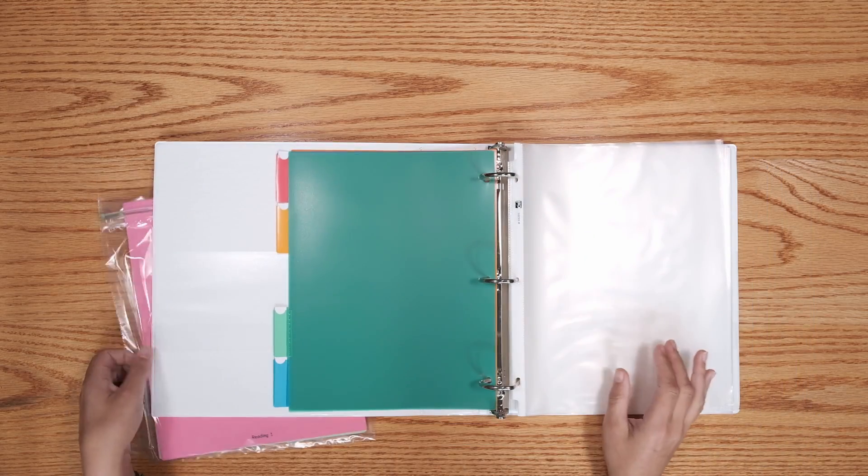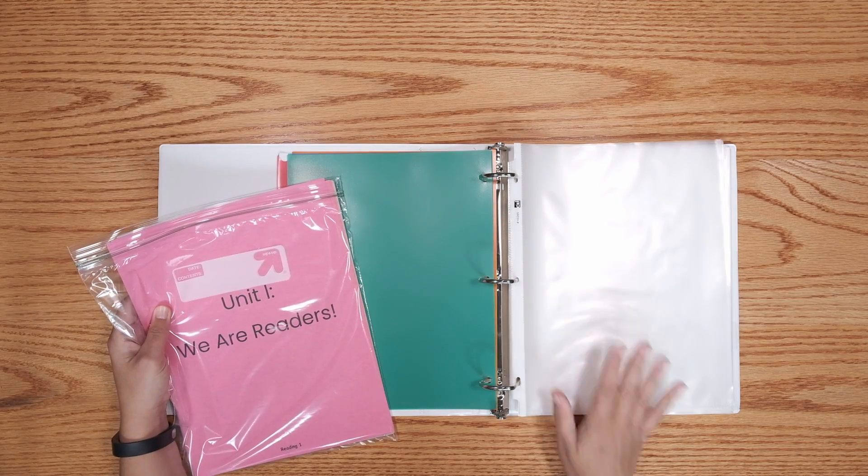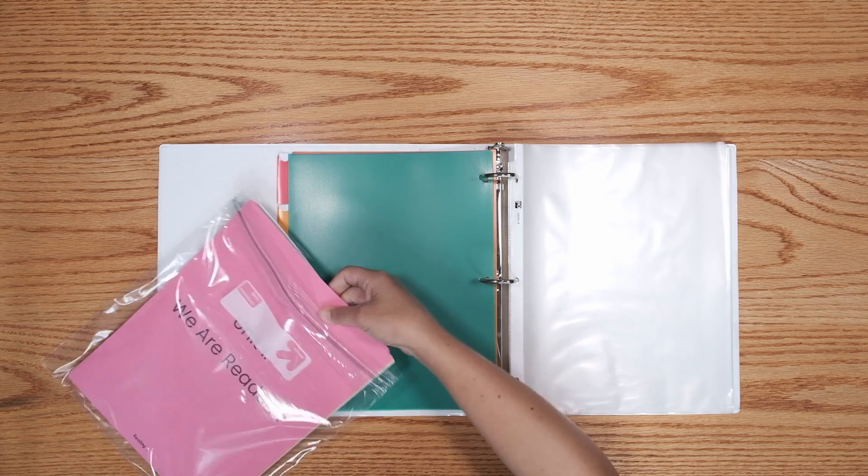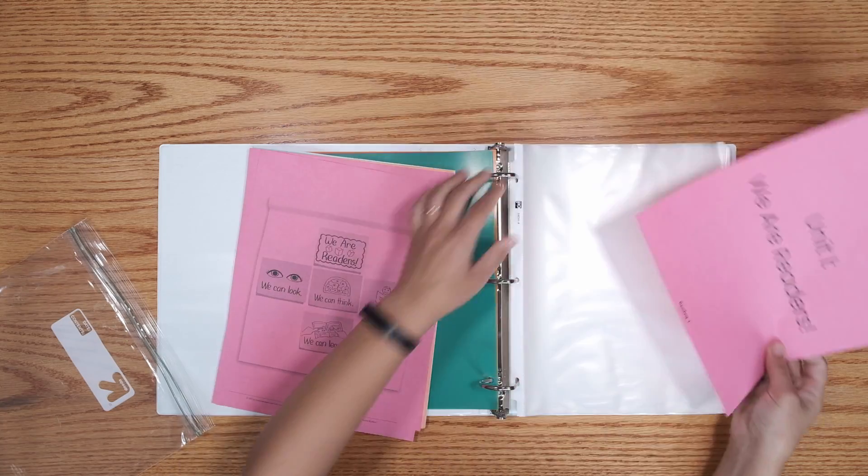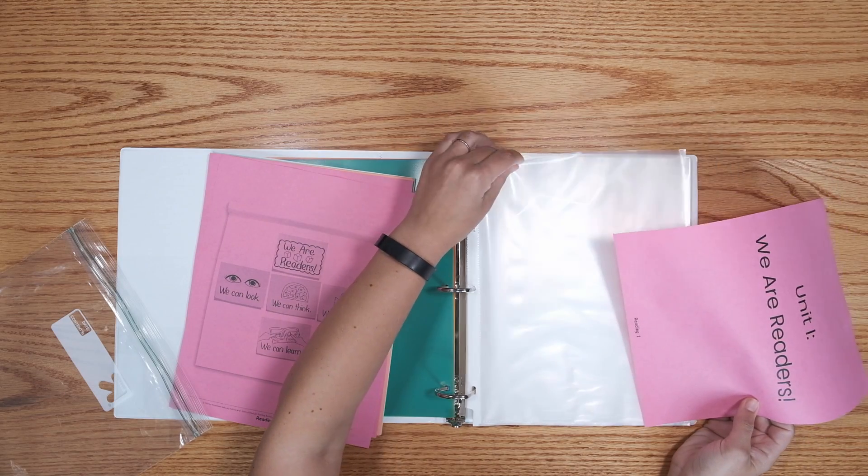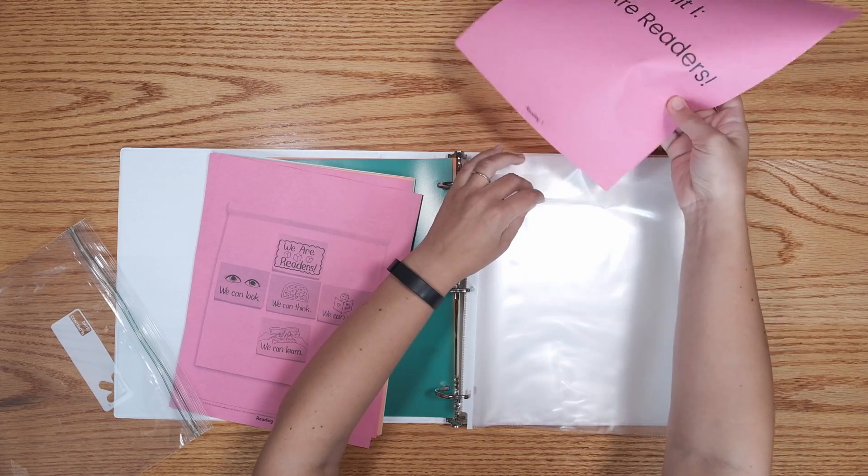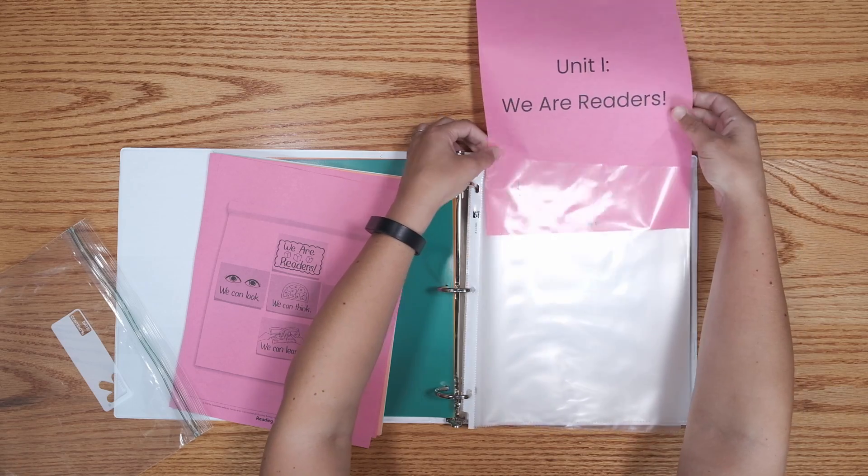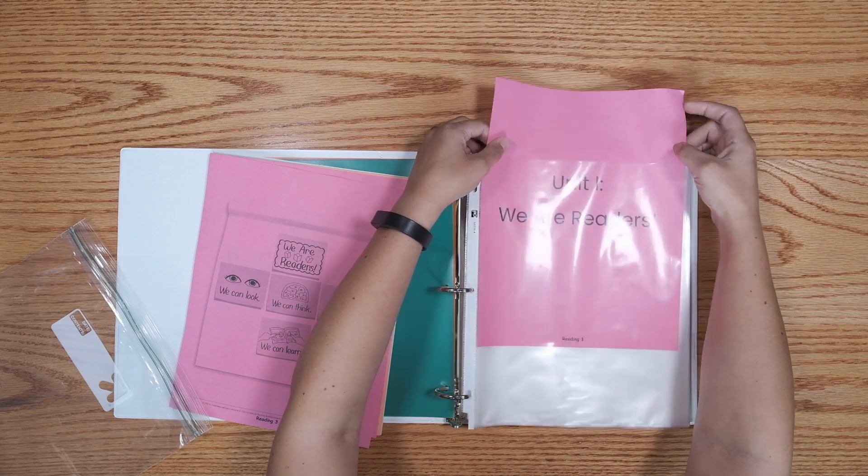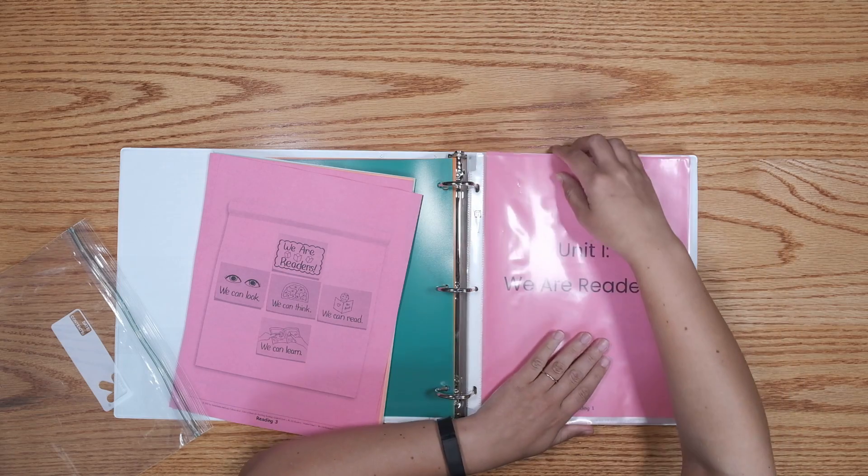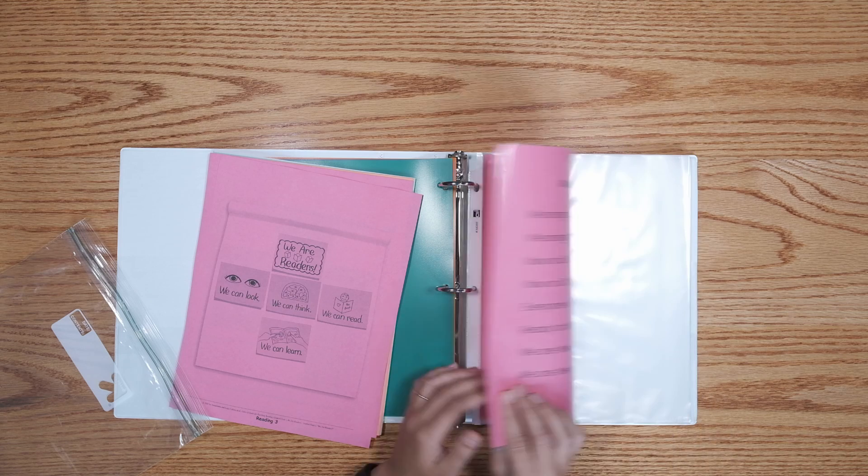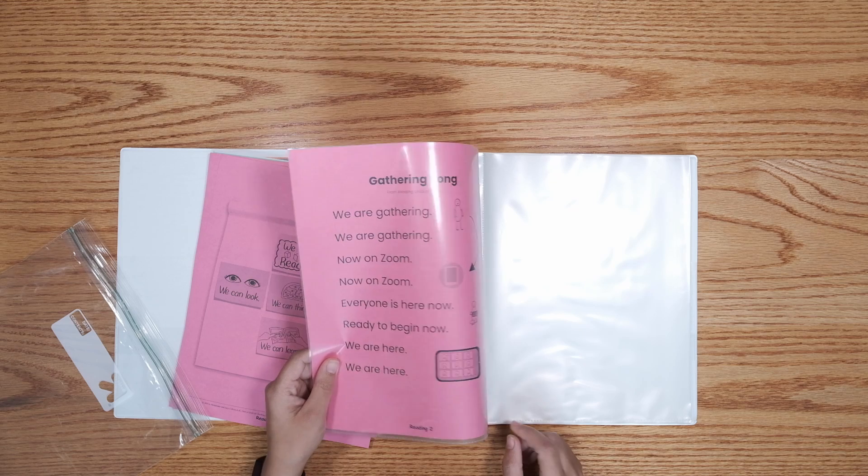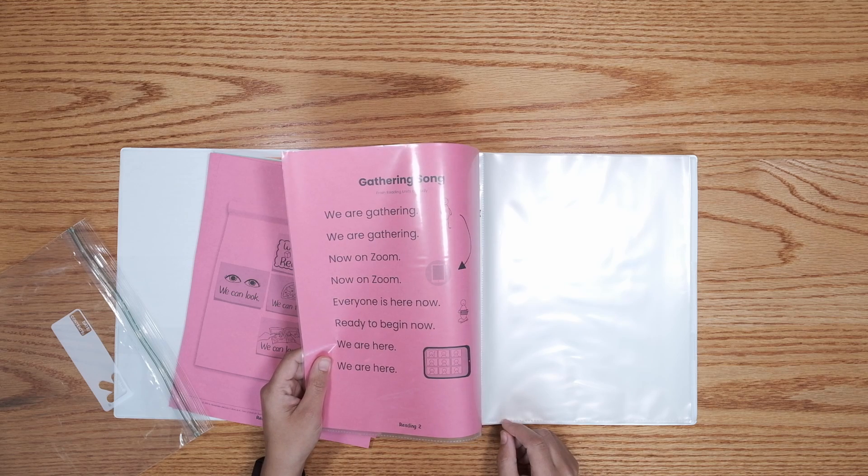You have all your sheet protectors and all your papers. The papers are going to go in the sheet protectors. I use my fingers to open them up and then slide them right inside. Because the pages are printed two-sided, you'll only put one piece of paper inside each sheet protector. Keep going until all your papers are in the sheet protectors.